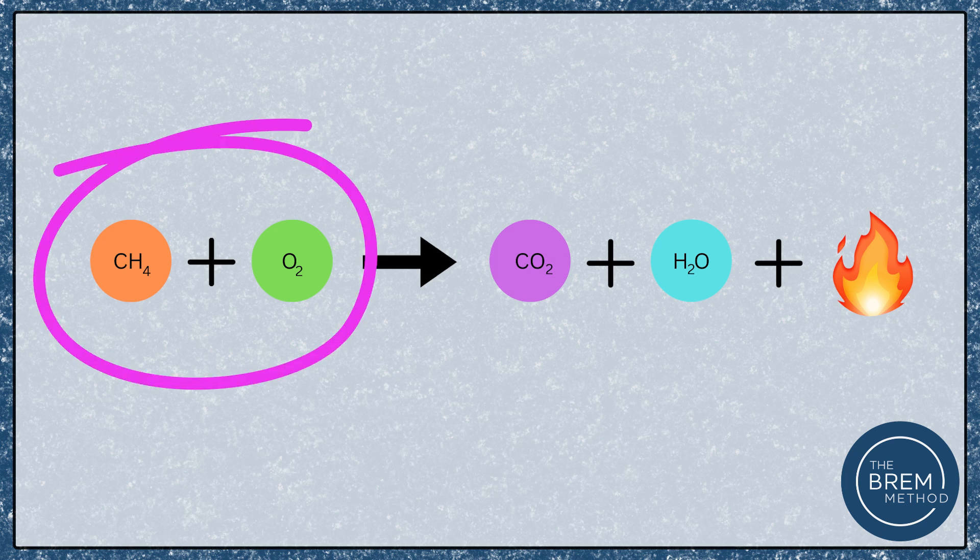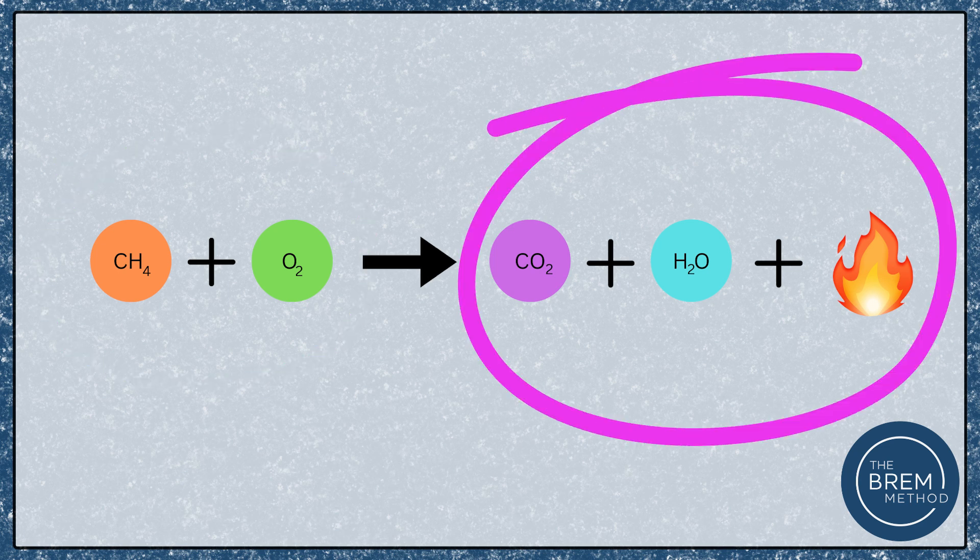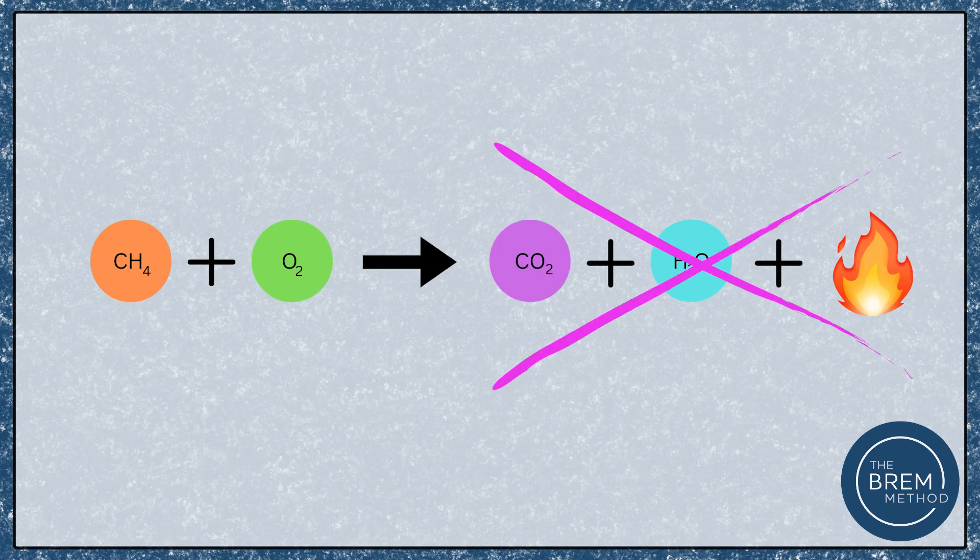Now when we do these calculations we are reactant focused. Reactants are the things at the beginning of the reaction. Products are the thing at the end that we produce. So what we're going to be talking about today is all about reactants. We actually don't include products when we're talking about rate laws or calculating the rate law constant given a table.